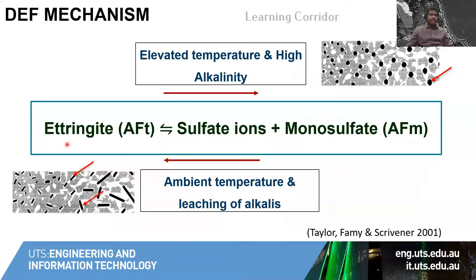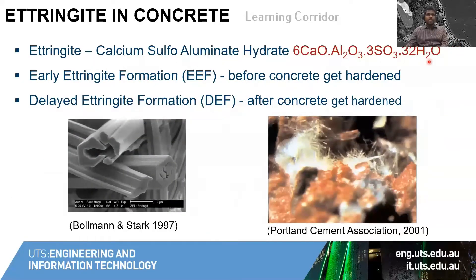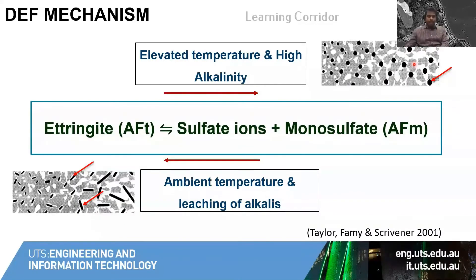When ettringite in the system is subjected to high elevated temperature, what happens is the cement also contains alkalis — potassium and sodium — in the pore solution, which gets drastically increased. The elevated temperature will actually dehydrate the ettringite; as we saw in the chemical formula, it contains a lot of water which gets dehydrated from its structure. The high alkalis in the cement system will then dissolve or decompose the ettringite into sulfates and monosulfate in the system.